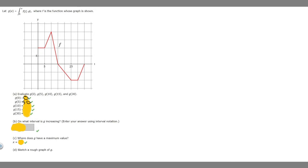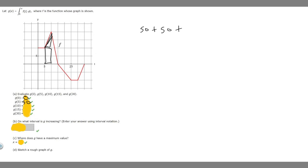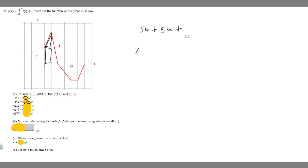What is g of 10? G of 10 is from 0 to 10, so it's this whole area. We already know the first part is 50. We can split the region into two shapes: another rectangle equal to 50, plus a triangle. For the triangle, area equals one half base times height — base is 5, height is 10 — giving one half of 50, which is 25. So 50 plus 50 plus 25 equals 125. G of 10 is 125.